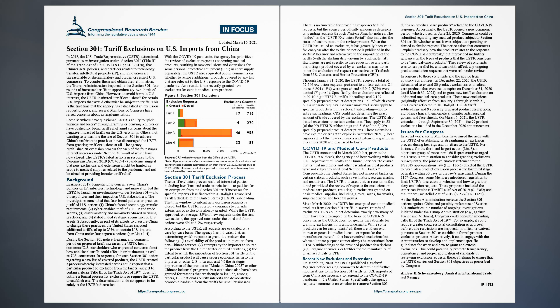While some products can be easily identified, there are others with known or potential medical uses, or inputs for the manufacture thereof, that have received exclusions but whose ultimate purpose cannot always be ascertained from HTSUS subheadings or the provided product descriptions — for example, organic chemicals or textiles for the manufacture of pharmaceuticals or PPE.